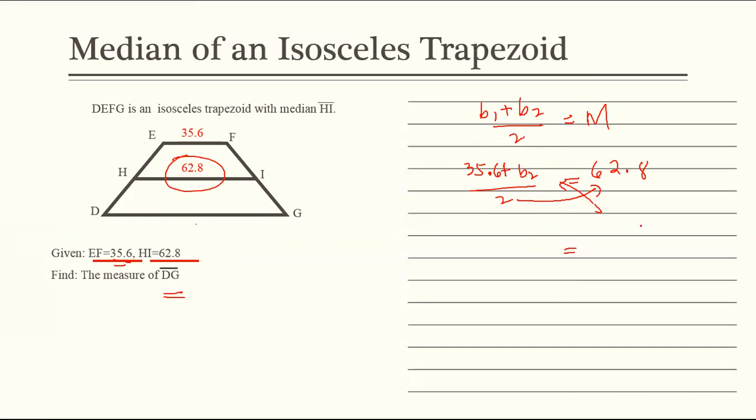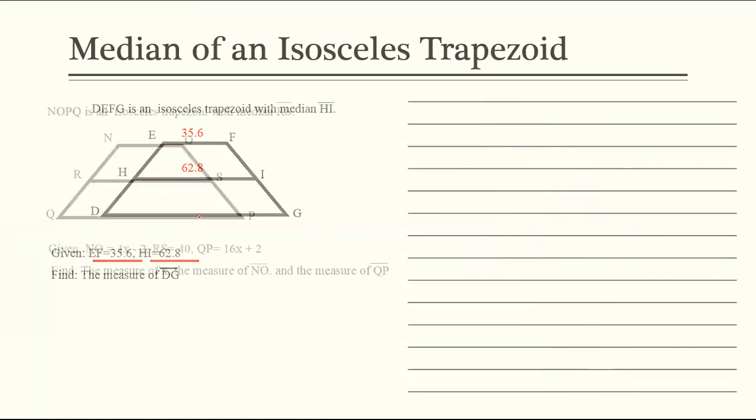So magiging 62.8 times 2, that's 125.6 is equal to 35.6 plus B2. Now to solve for B2, ililipat natin to doon sa kabila. So magiging B2 is equal to 125.6 minus 35.6. And B2 or yung lower base natin ay 90. So B2 is equal to 90. 90 yung sukat ng lower base.